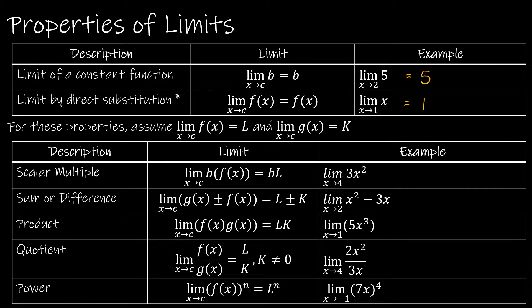In our next video, we're going to take a look at what happens when you can't direct substitute. But for now, if you can direct substitute — whether it's a rational function, a polynomial function, or whatever — you should. For the remaining properties, think about the fact that we're going to have basically two functions: f of x, which as x approaches c has a limit of L, and g of x, which has a limit of k.